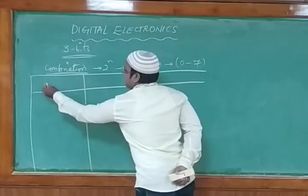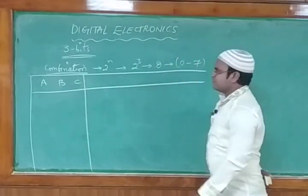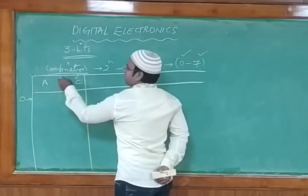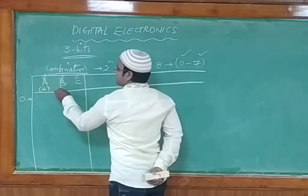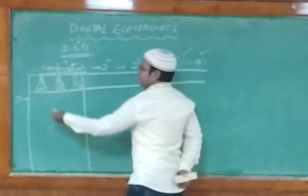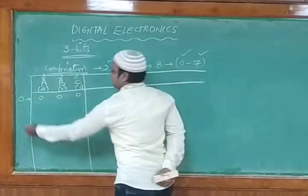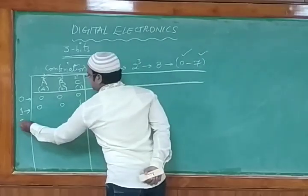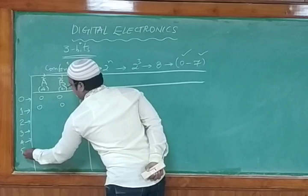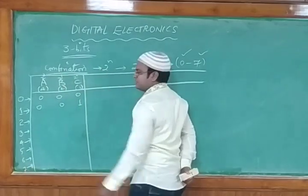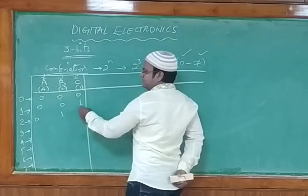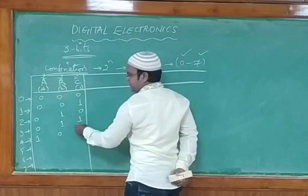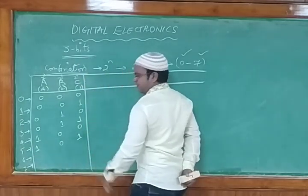Digit 0 is 000, digit 1 is 001, digit 2 is 010, digit 3 is 011, digit 4 is 100, digit 5 is 101 (4+1), digit 6 is 110 (4+2), and digit 7 is 111 (4+2+1). Now we write these in minterm notation: for each bit, 0 becomes the complement of the variable and 1 becomes the variable itself.